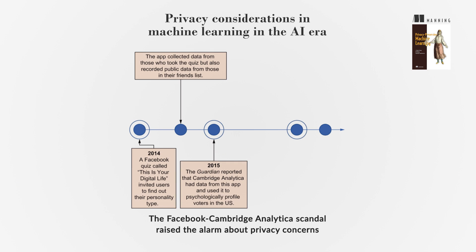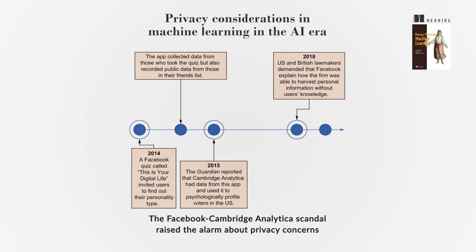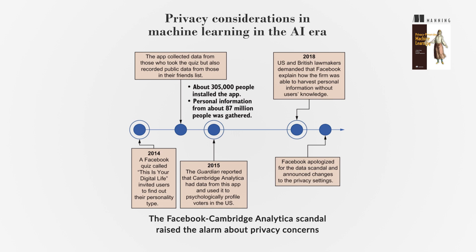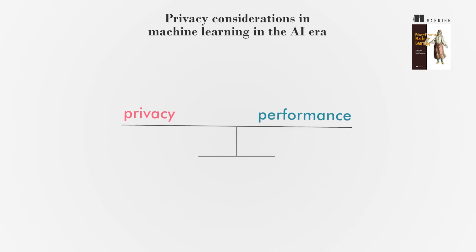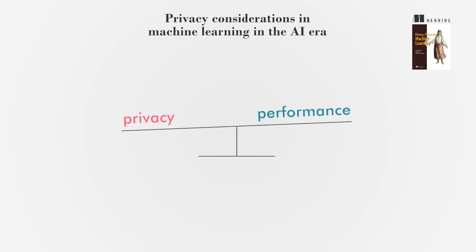The Facebook Cambridge Analytica scandal in 2018 and subsequent lawsuits highlighted the need for improved privacy in cloud-based data-driven applications. Mainly, these applications face privacy concerns due to the extensive data they rely on, and unauthorized access can compromise personal data. To address these concerns, privacy regulations like HIPAA and GDPR are in place. However, achieving a balance between privacy and performance remains a significant challenge in ML applications.